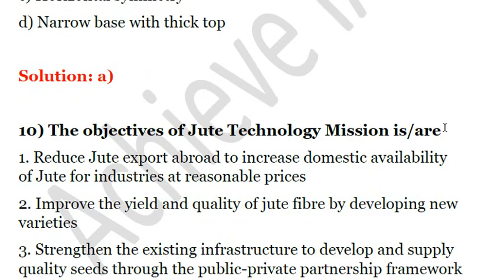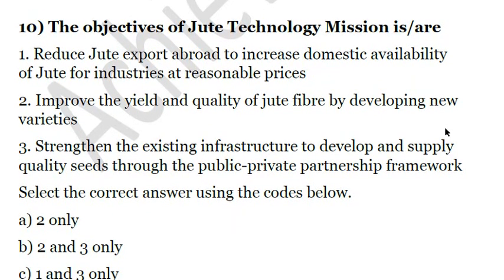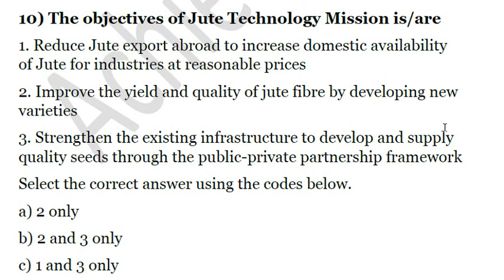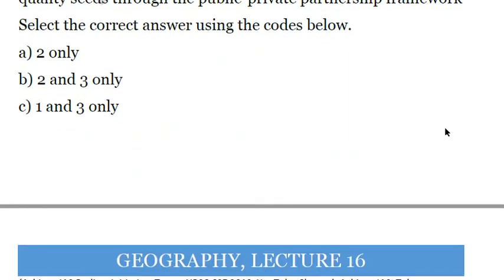The 10th and last question: the objectives of the Jute Technology Mission are — one, reduce jute exports abroad to increase domestic availability at reasonable prices; two, improve the yield and quality of jute fiber by developing new varieties; three, strengthen existing infrastructure to develop and supply quality seeds through the public-private partnership framework. The first statement is clearly incorrect because the Jute Technology Mission also focuses on increasing jute exports. The second and third are correct, so the answer is B.